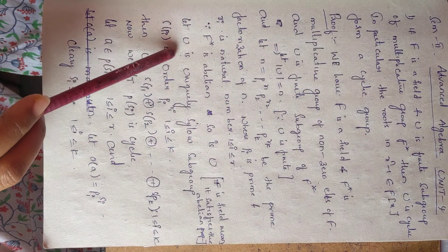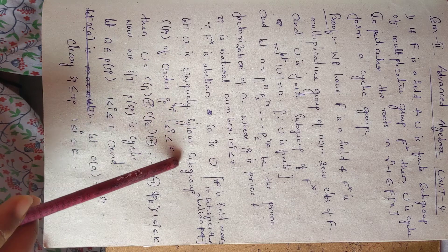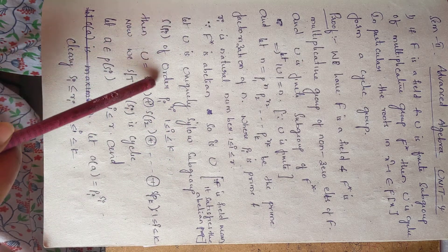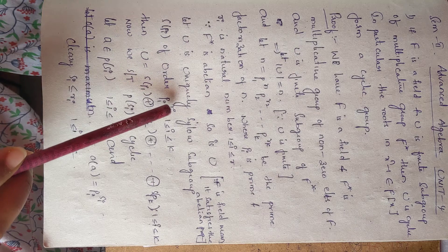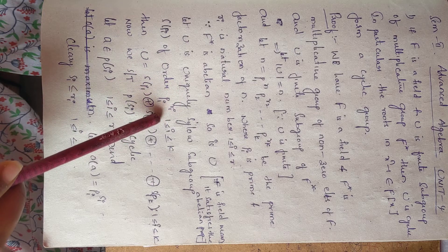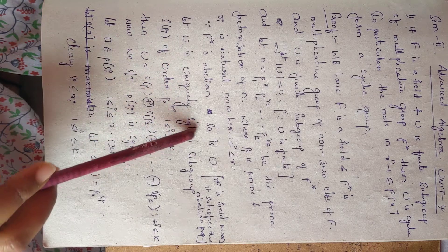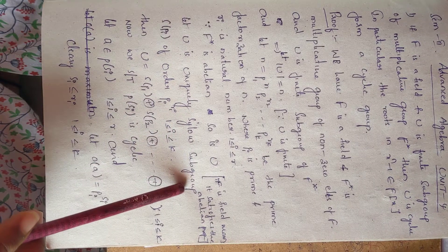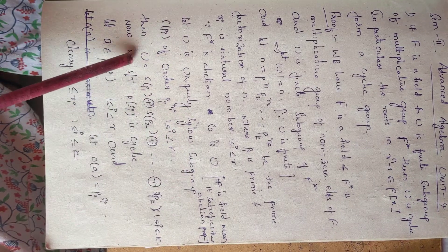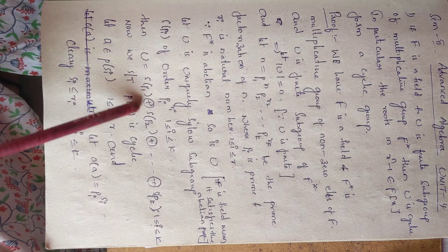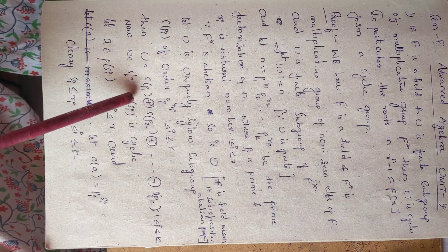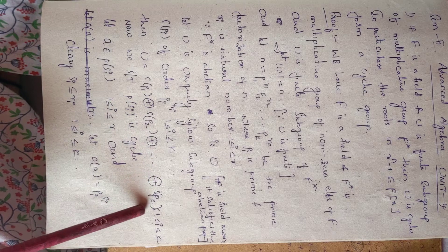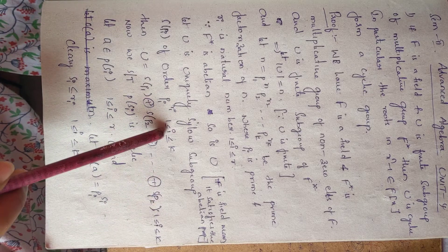Now, since u is a finite abelian group, u has a unique Sylow p-subgroup S(p_i) of order p_i^r_i for each i from 1 to k. By the definition of Sylow subgroups, u is equal to S(p1) ⊕ S(p2) ⊕ ... ⊕ S(pk).